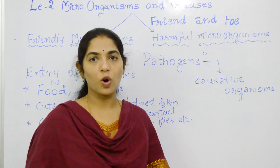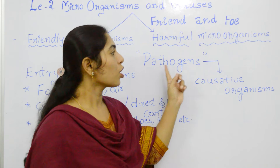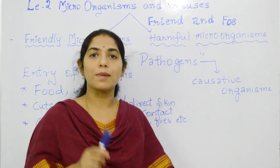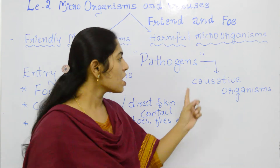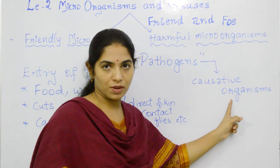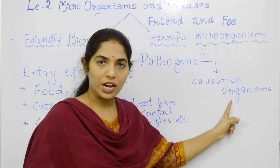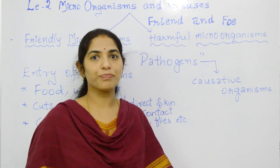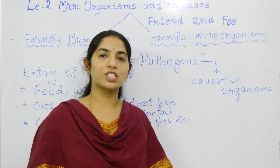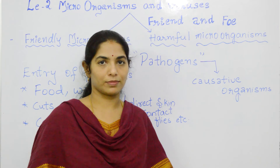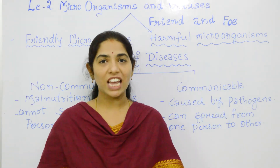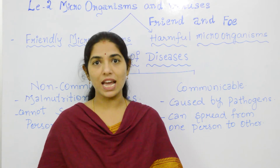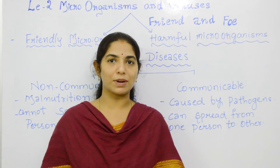Pathogens cause different diseases. The microorganisms which cause a particular disease are called causative organisms. For example, malaria is caused by a protozoan called Plasmodia. Another example: typhoid is caused by Salmonella typhi. Knowledge about the causative organism, their life cycles, and different modes of transmission of the disease is very helpful in effective prevention of that particular disease.